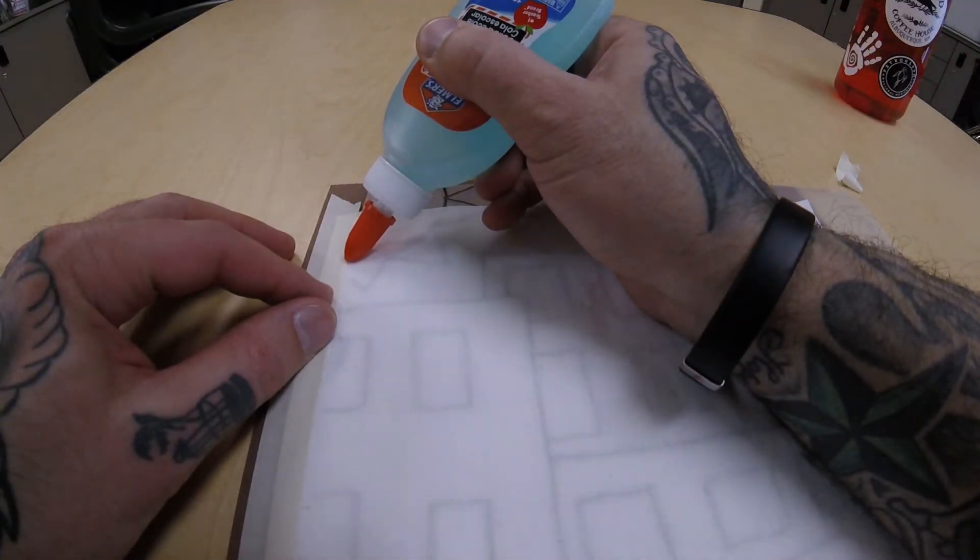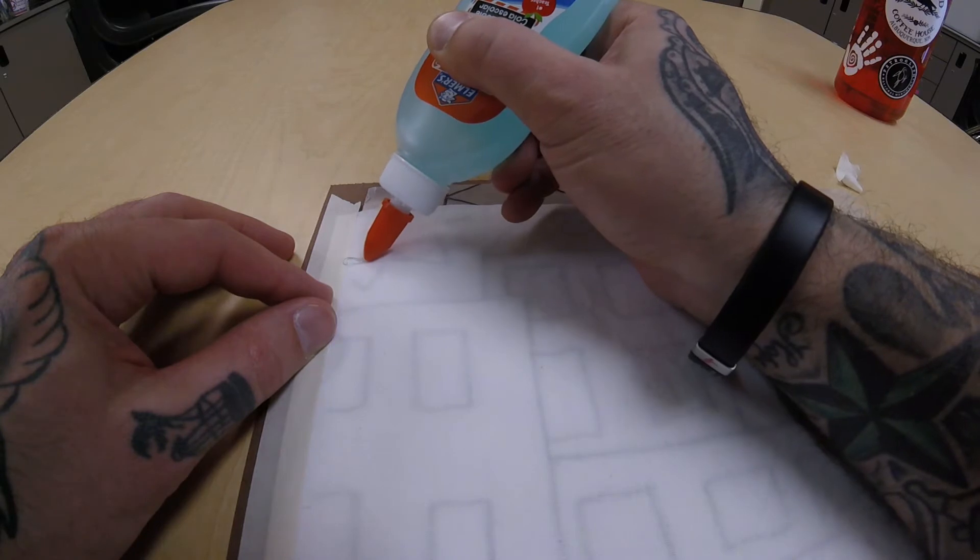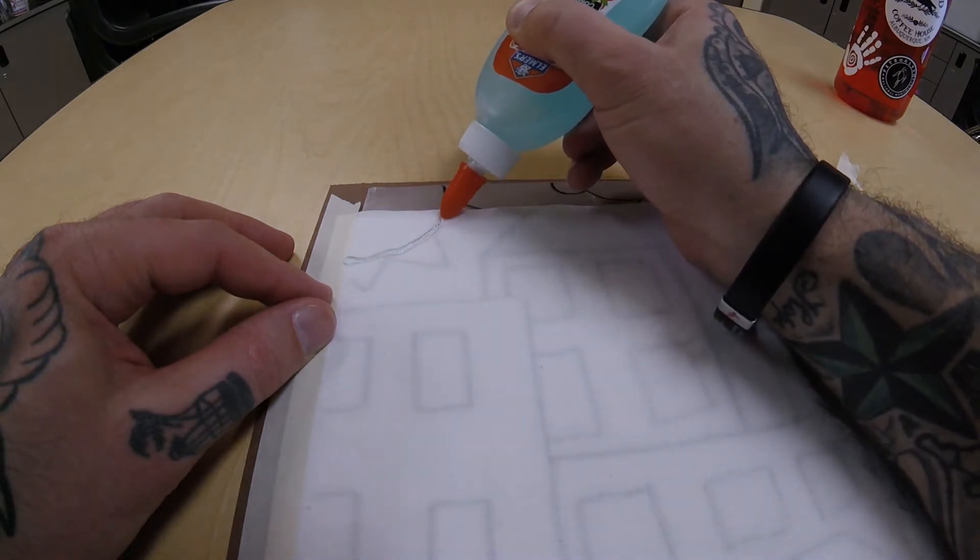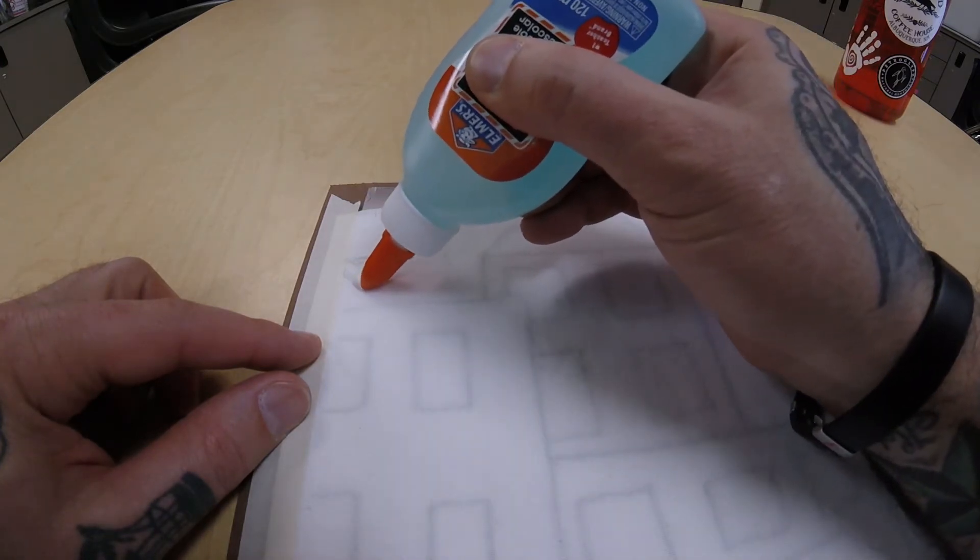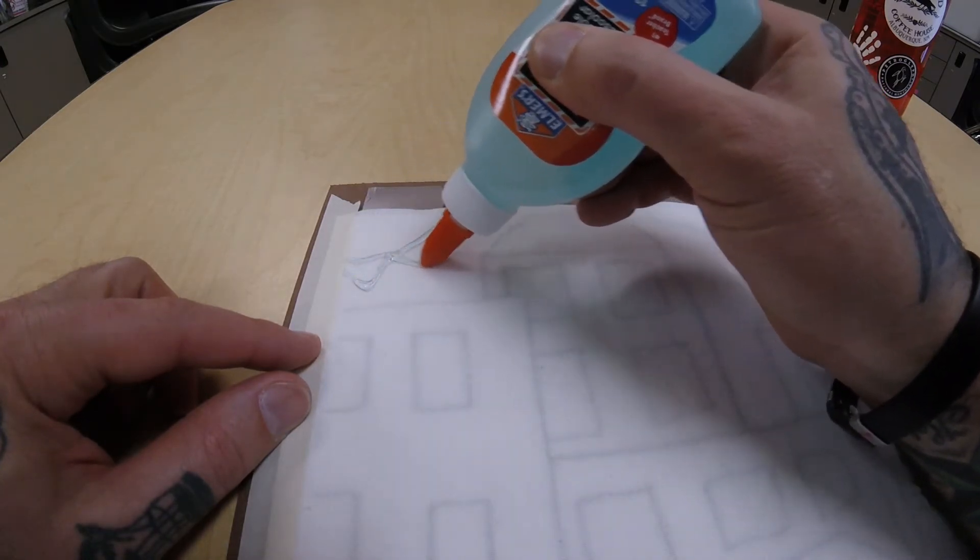Whenever I've done this project in the past, I see kids use way too much glue. Something you need to know is that glue will actually start to flatten out as it dries, and that line will get wider.